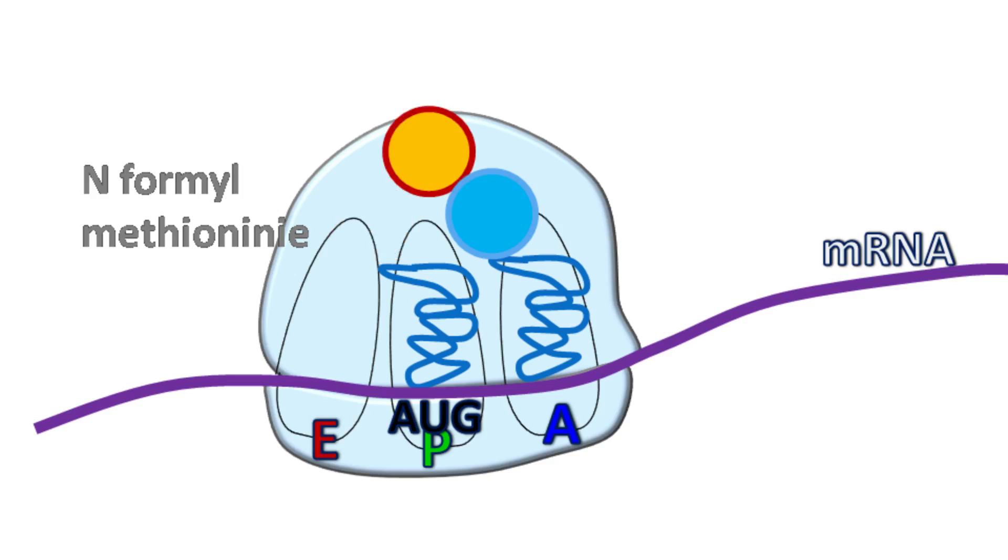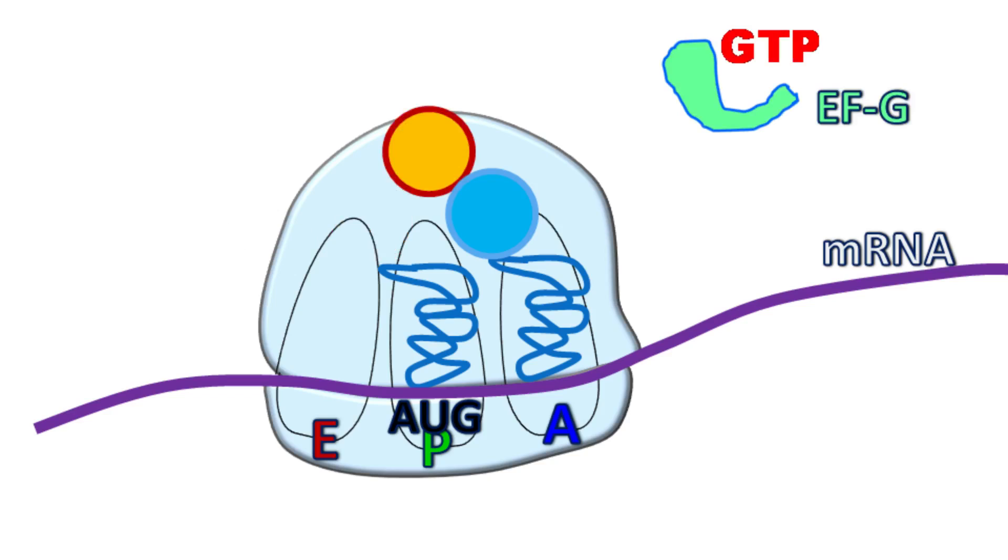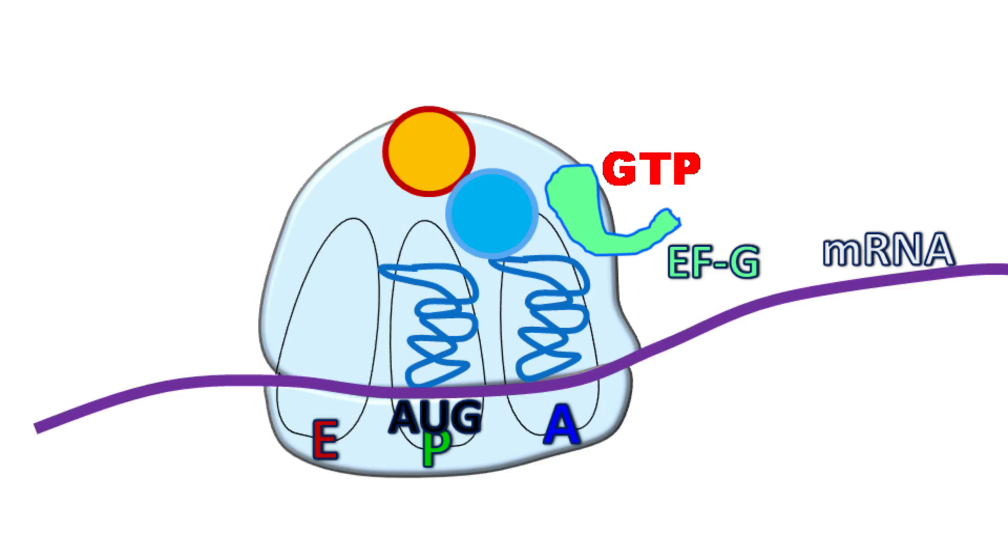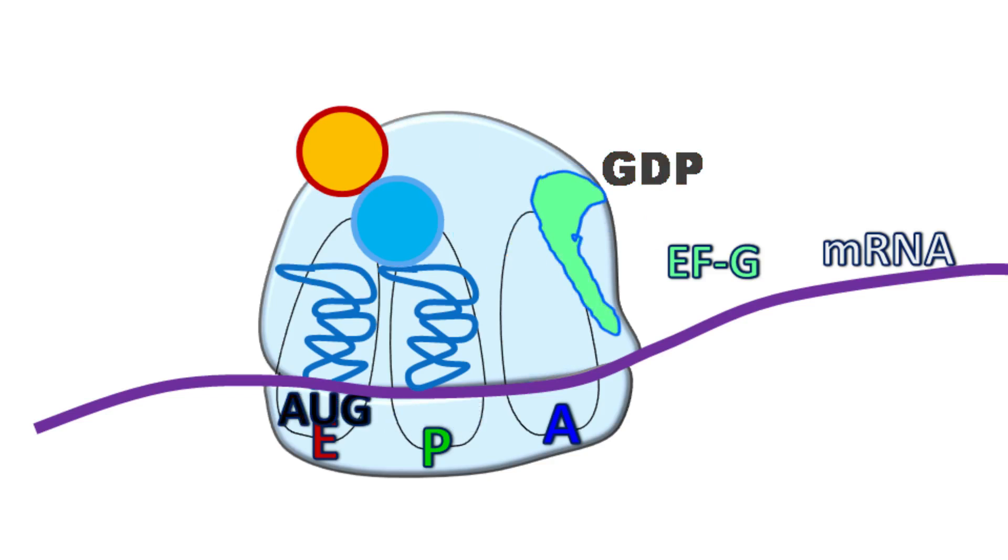Next, elongation factor EFG helps in the translocation. The GTP bound EFG binds to the ribosome and the GTP is hydrolyzed to GDP. As a result of this conformational change, the tRNA carrying two amino acids at the A side shifts to the P side of the ribosome.